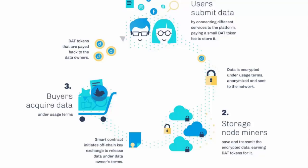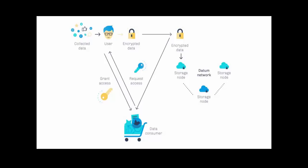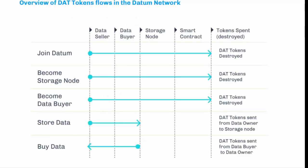Privacy: each piece of data in the Datum network is marked with usage terms during encryption. This way, users can control in what way their data is to be shared and used by others. The usage terms are controlled by the data token smart contract. Users have full control over privacy settings and can fine-tune with whom to share data.